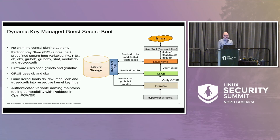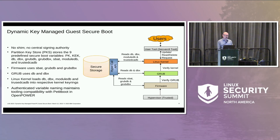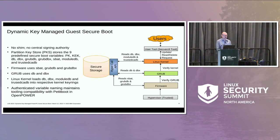Firmware uses the SBAT, grubdb, and grubdbx; grub uses the db and dbx. The Linux kernel loads db, dbx, module db, and trusted cadb into respective kernel keyrings. The authenticated variable naming maintains compatibility with the existing tooling for OpenPower. The use of db and dbx for the kernel is an artifact of not having to worry about the bootloader in OpenPower — it's a little similar to UEFI, but it's not UEFI.